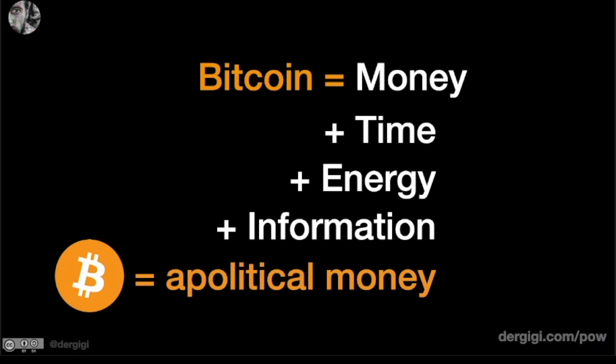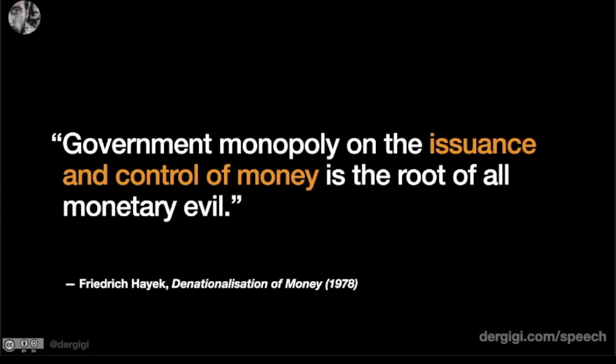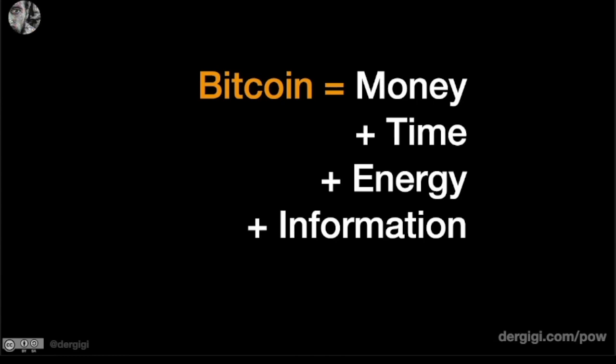Why is this important in the first place? We know the money is broken. Hayek phrased it beautifully in 1978: government monopoly on the issuance and control of money is the root of all monetary evil. We see this very clearly now - people getting deplatformed, whole countries getting deplatformed, bank accounts frozen, trillions created out of thin air. The problem is basically this: if someone has the power to create and control the money, this power will be abused always.